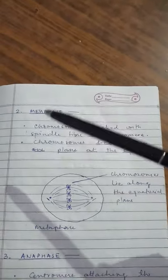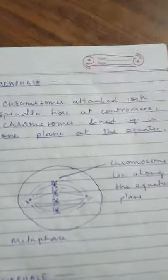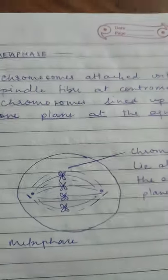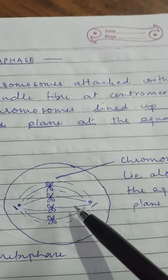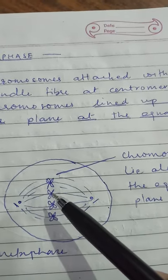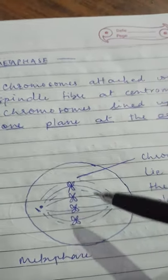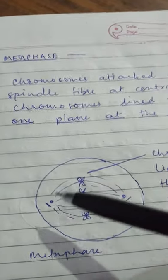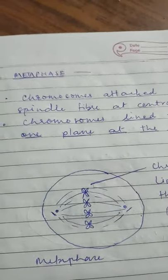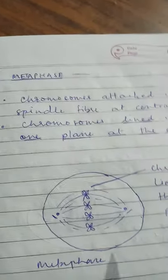Now we come to the second phase, that is metaphase. Here in metaphase, chromosomes attach with spindle fibers at the centromere. The most remarkable feature is the alignment of chromosomes in one plane, that is the equatorial plane of the cell. This is the feature by which we can identify this phase.